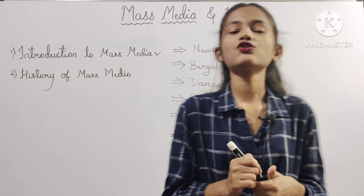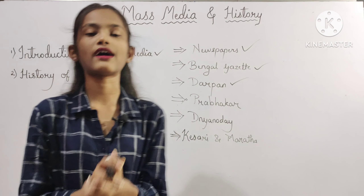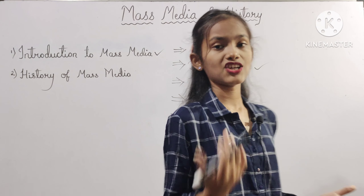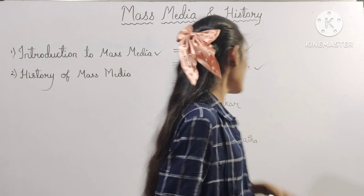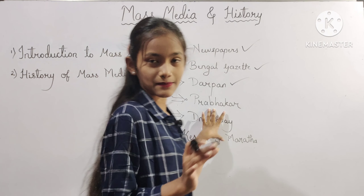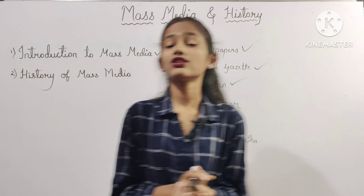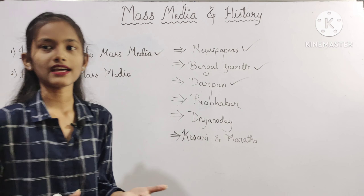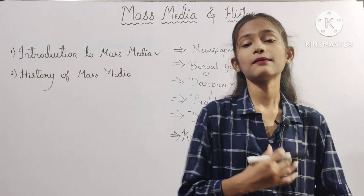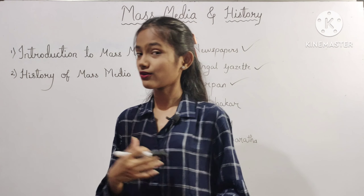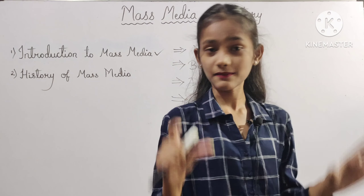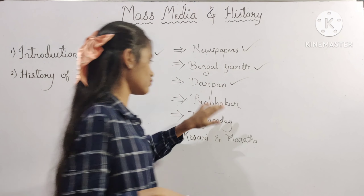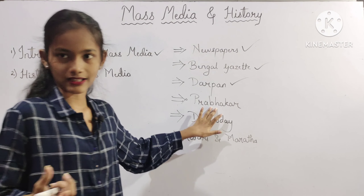The next newspaper is Prabhakar. The newspaper Prabhakar was started by Bhau Mahajan. The history of the French Revolution and the Shat Patre — the letters by Lokhitwadi Gopal Hari Deshmukh — aimed at creating social awareness were published in this newspaper. Prabhakar ke through log jagrukta prapt karte the.